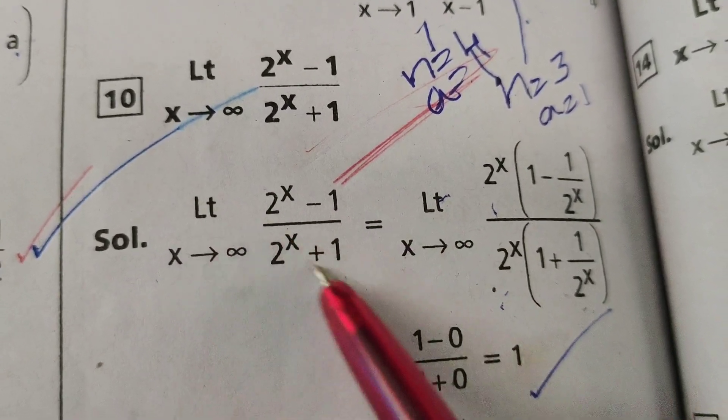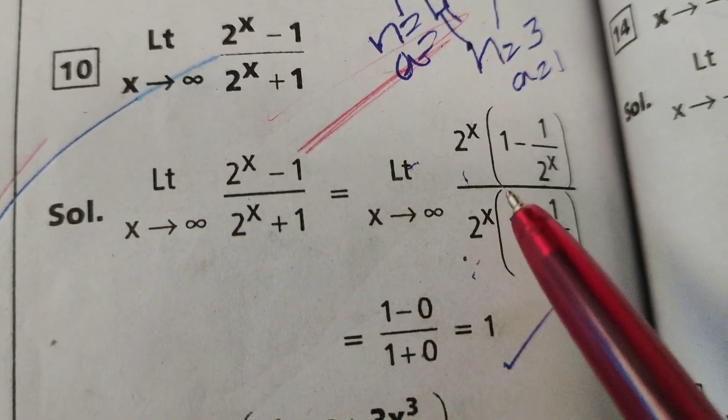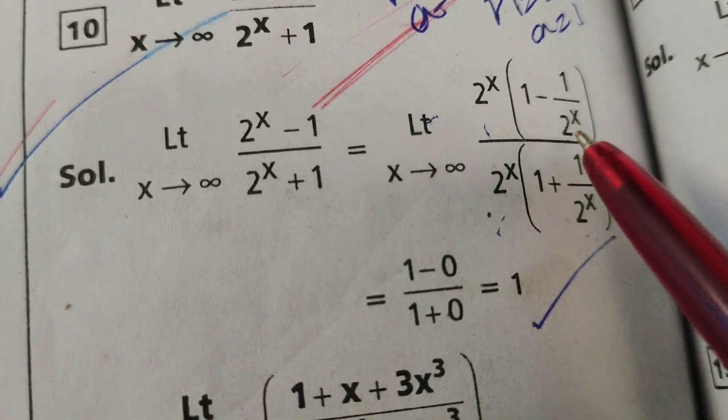Next, that limit x tends to infinity, in this numerator, 2 power x into 1 minus 1 by 2 power x.